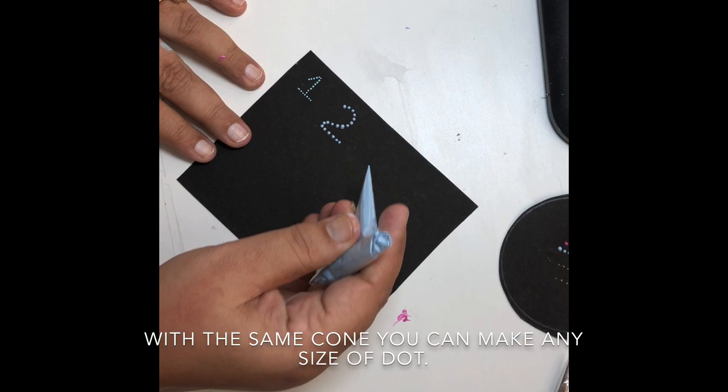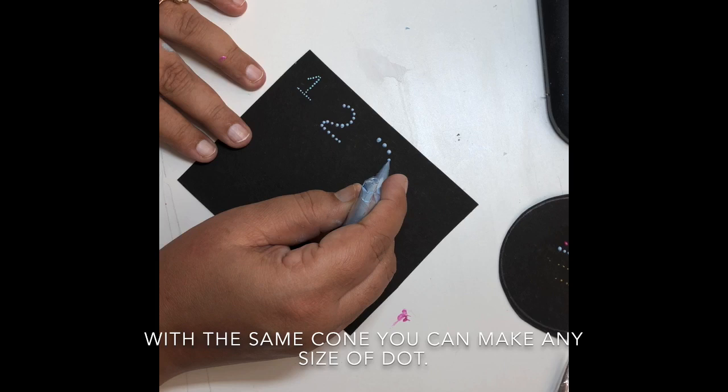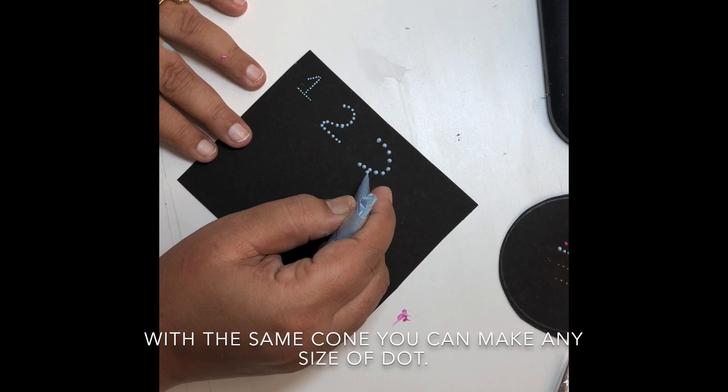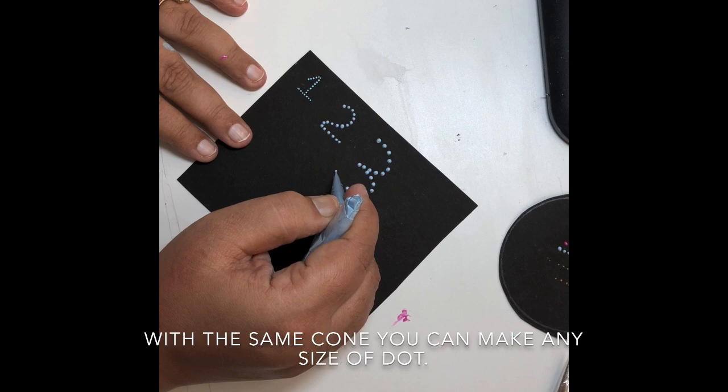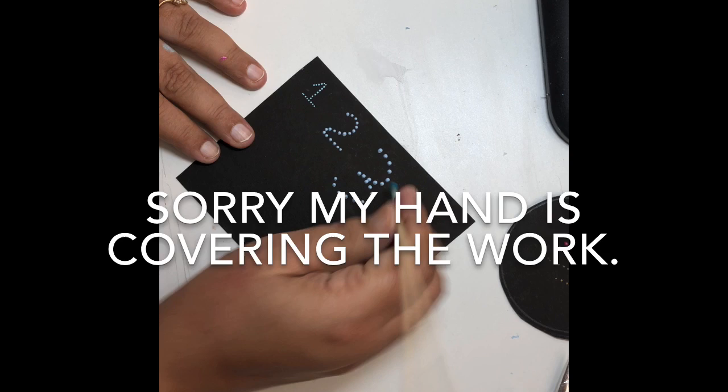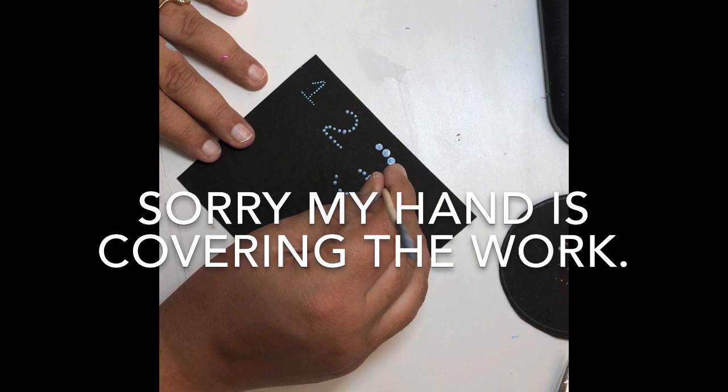And number three is a little bit more bigger. You just press the cone a little bit more with more pressure and these dots will be done. If you think they are not coming in the perfect size, then you can just take a dotting tool and put it on every dot and your all the dots will be same size and perfect.